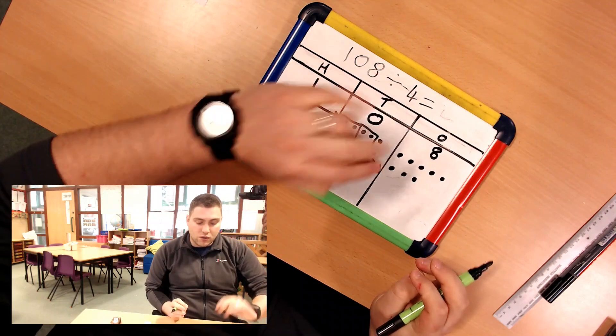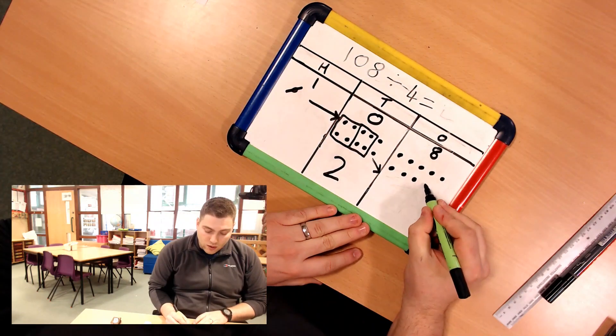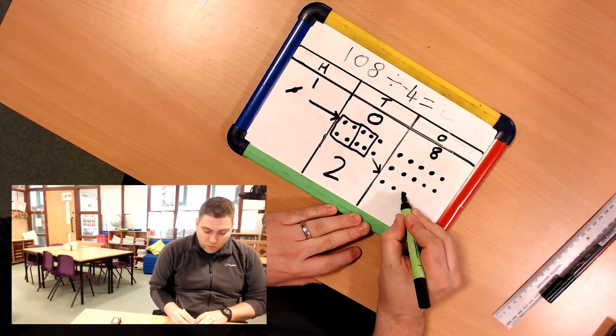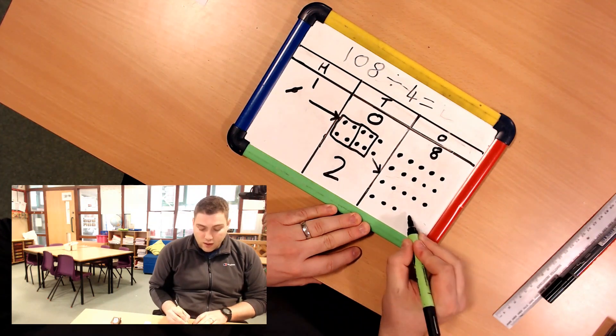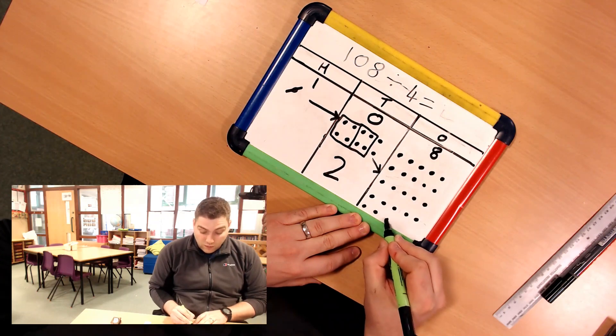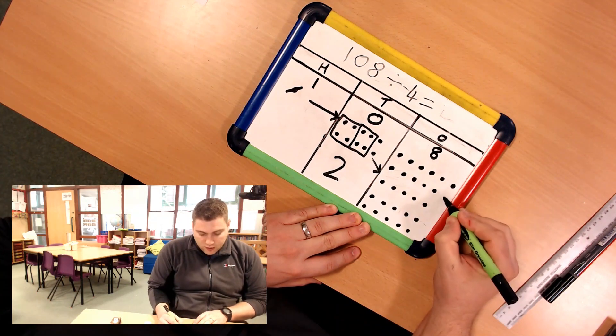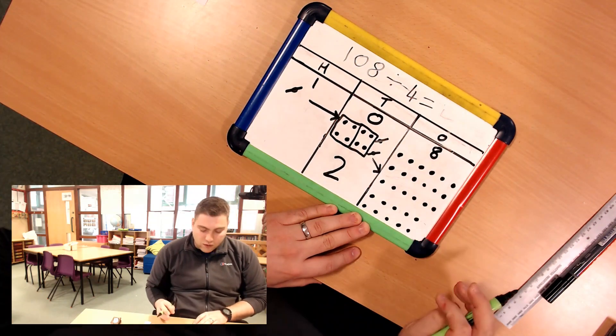So this time I've got 2 10s that need to become 1s. 1, 2, 3, 4, 5, 6, 7, 8, 9, 10, 11, 12, 13, 14, 15, 16, 17, 18, 19, 20. And now I'm going to cross out these 2 so I know that I've used them.